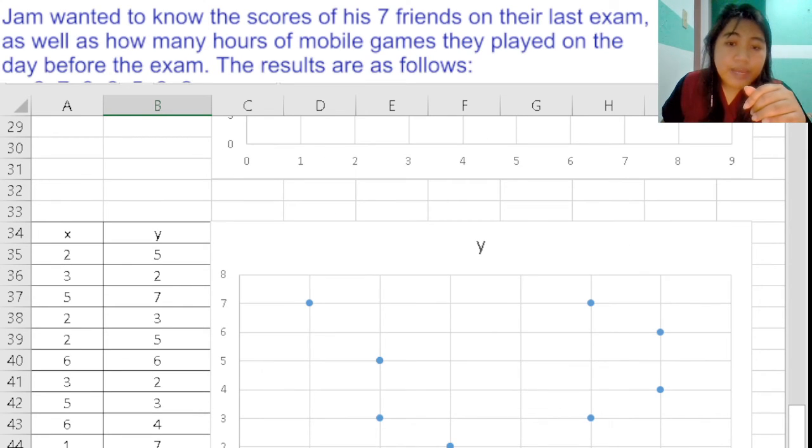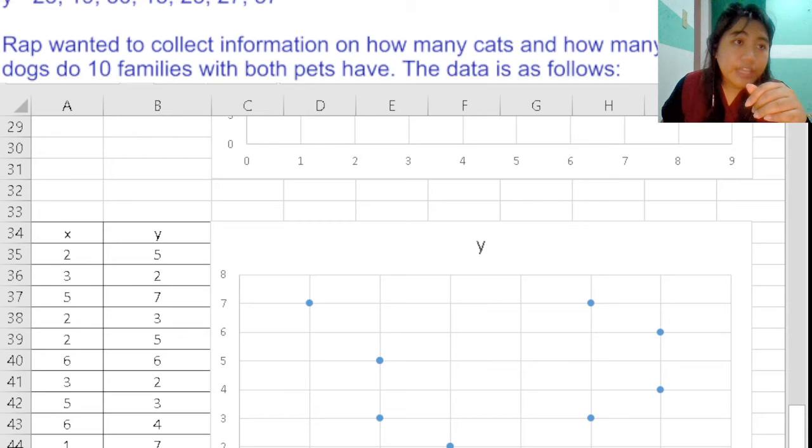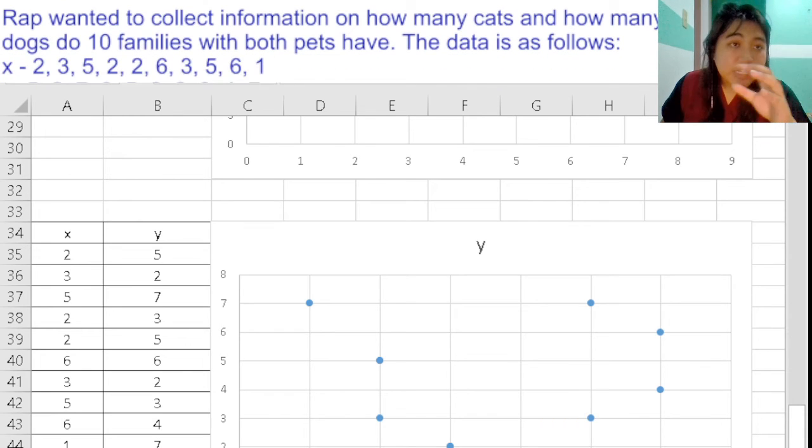On our third example, we have the data plotted in the scatterplot, being our x and y, being the cats and the dogs owned by families which own both pets. You can see this being non-linear in form, this being no correlation or no distinct direction, leading to no correlation when it comes to trend, and there being no correlation again when it comes to variation because there is no trend or direction.